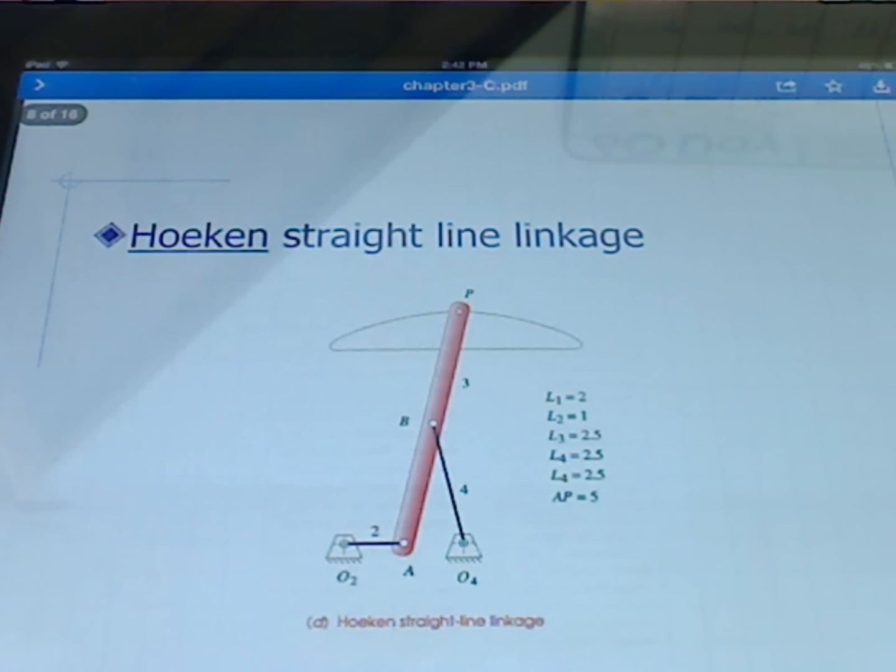Here is the Hoeken straight line linkage, very popular. We'll be using this one to do a couple of other things with during the course. And in this particular linkage, we see that there's a portion that's definitely not straight, but this portion here is the straight line portion of this mechanism.